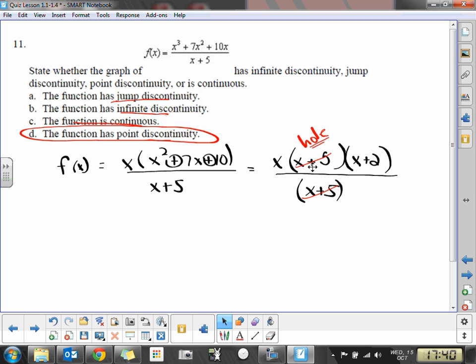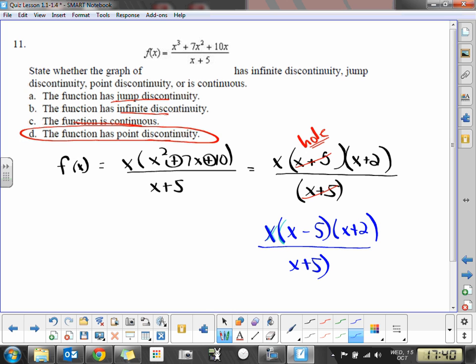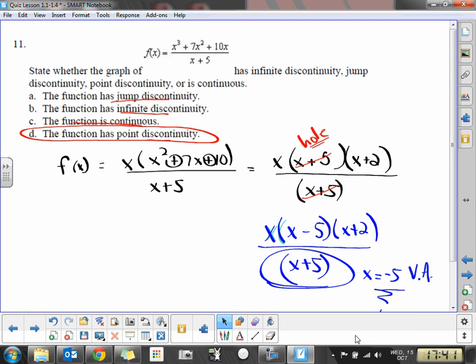If this did not have an x + 5 up there versus if it were something like x times x minus 5 over x + 5, now instead of having removable discontinuity, all we would have is a vertical asymptote at x equals negative 5. So at x equals negative 5, we have a vertical asymptote, which means it would have an infinite discontinuity at negative 5.